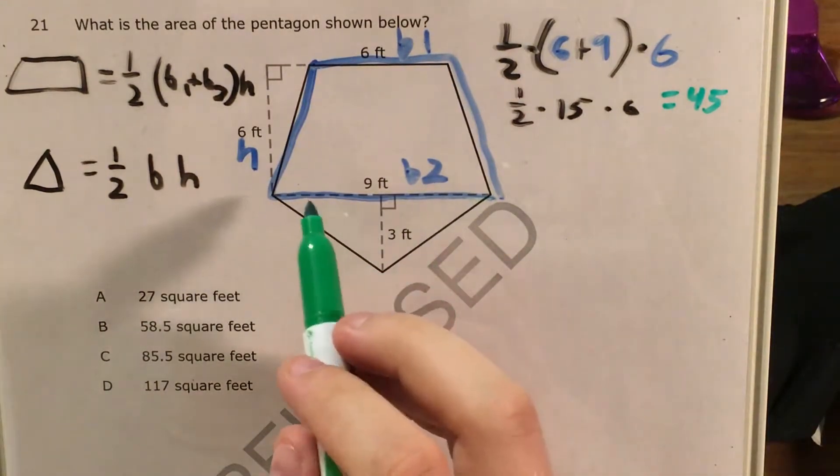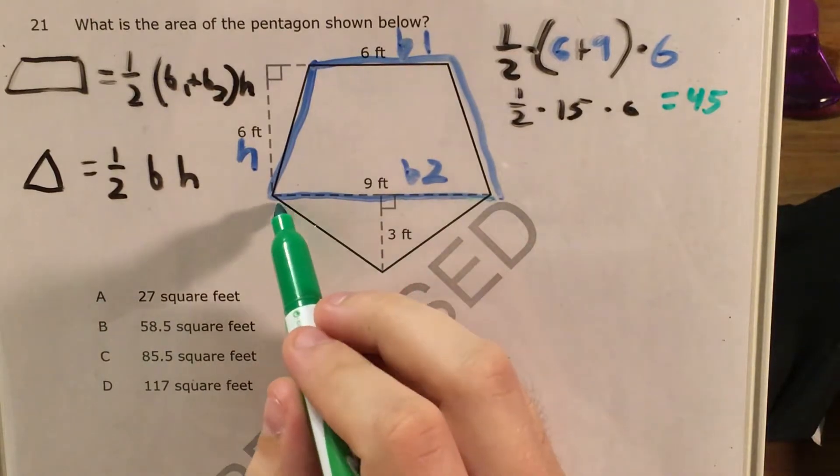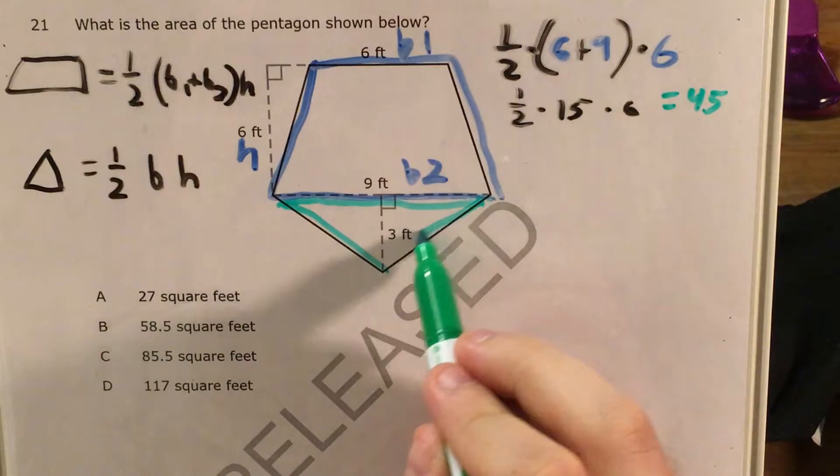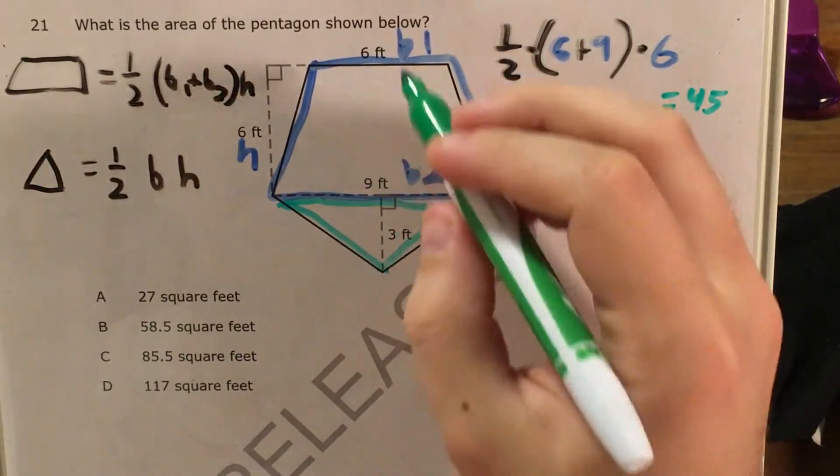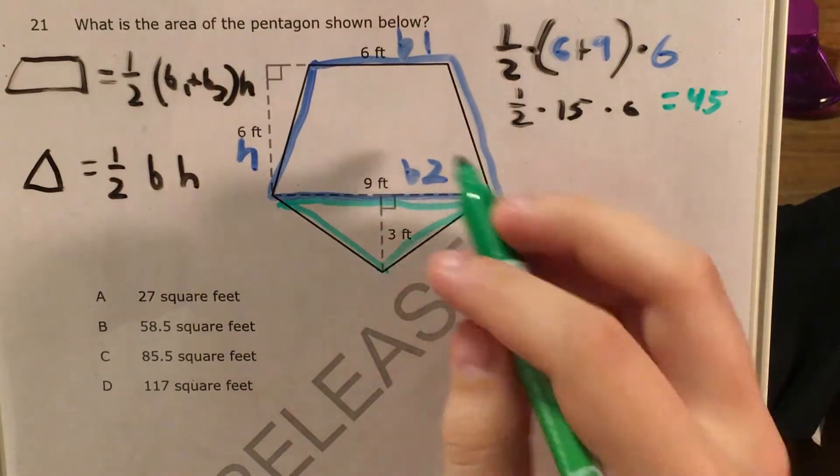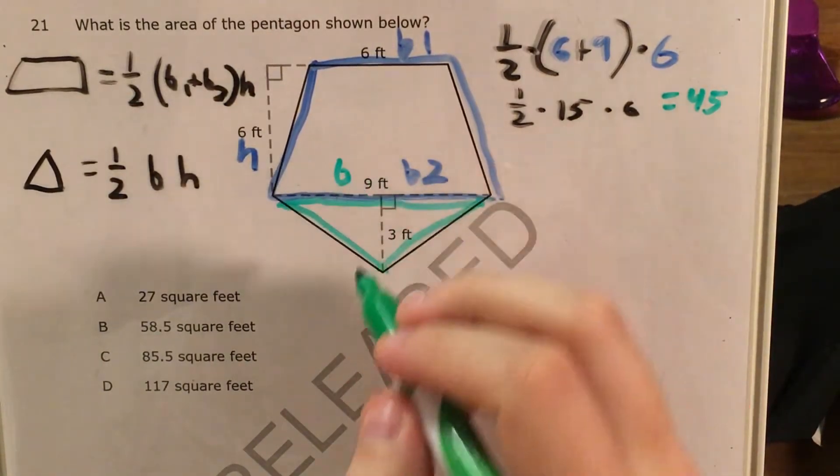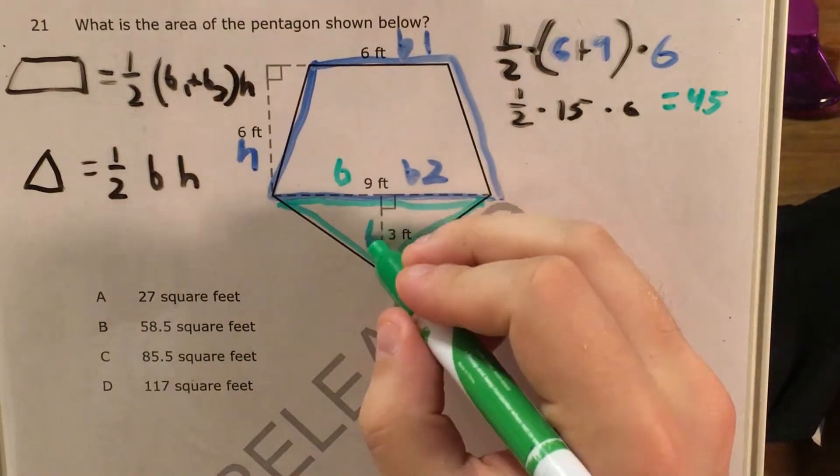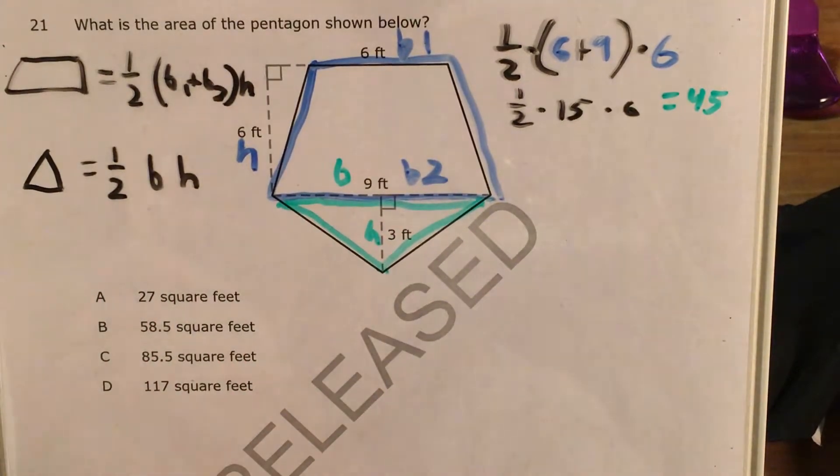So now I need to figure out the area of this triangle. To figure out the area of a triangle I just need a base and I need a height. And I'm using green for the triangle to separate the colors because now this side, my base, is still going to be nine feet. I just have to use a different name for it because it has a different name in the formula. And then my height is going to be three feet.